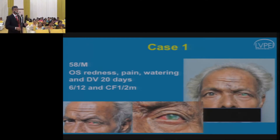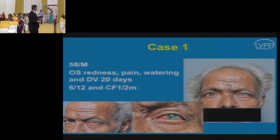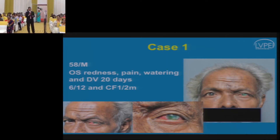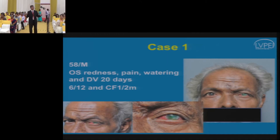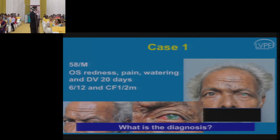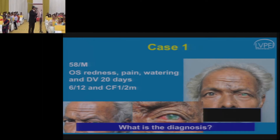A 58-year-old male presented with redness, pain, watering, and defective vision of 20 days duration. The patient had painful lesions on the left side of the face five years prior. Visual acuity was counting fingers at half a meter. The diagnosis is herpes zoster ophthalmicus, because the depressed lesions are restricted to one half of the face and none are crossing the midline.